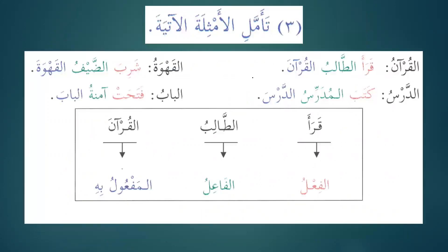Reflect on the following examples. Al-Qur'anu is marfoo'. In a verbal sentence, we know the verbal sentence starts with a verb — qara'a is the verb, al-talibu is the subject, and al-Qur'ana is the object. The object is always mansoob. So that's what we have to reflect: a verbal sentence starts with a verb, then has a doer, and sometimes has an object. Whenever we have the object — al-maf'ool bihi — it is always mansoob.